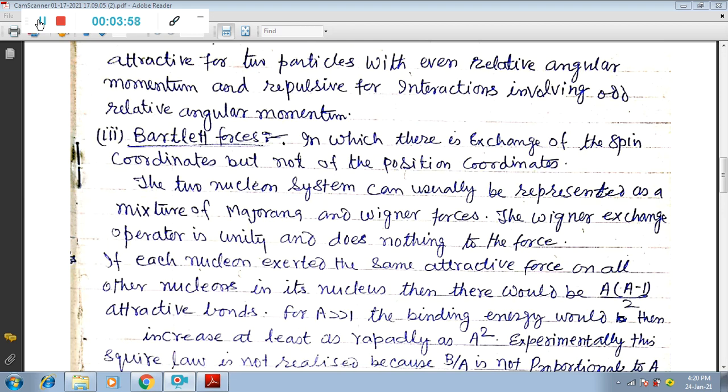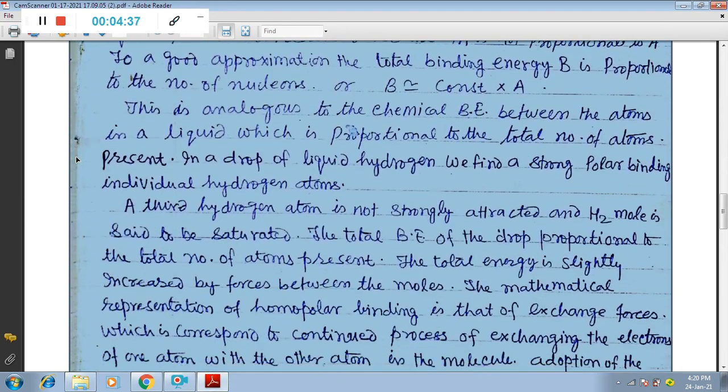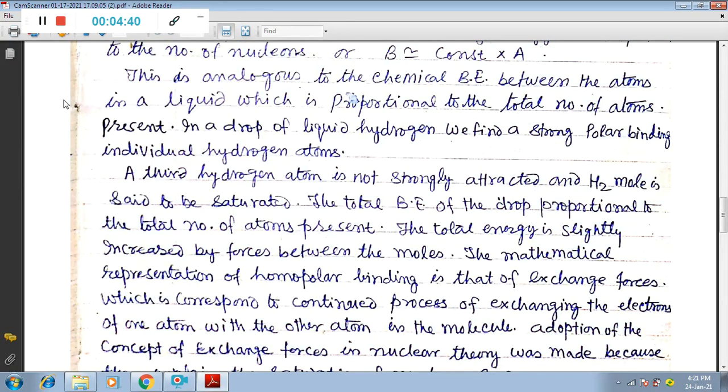To a good approximation, the total binding energy B is proportional to the number of nucleons, or we can say B is equal to constant into A. This is analogous to the chemical binding energy between the atoms in a liquid, which is proportional to the total number of atoms present in a drop of liquid hydrogen.